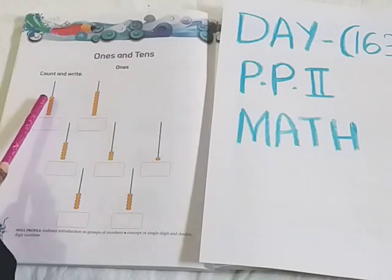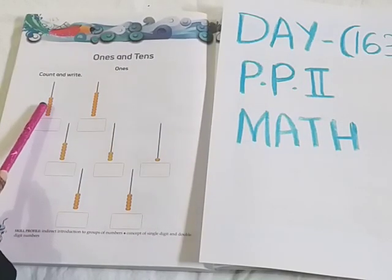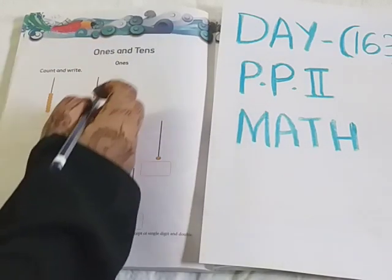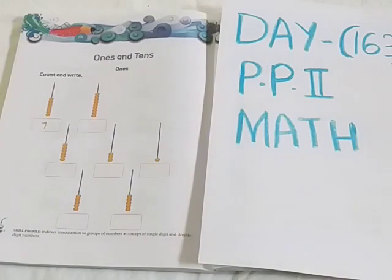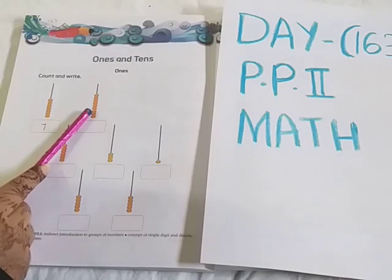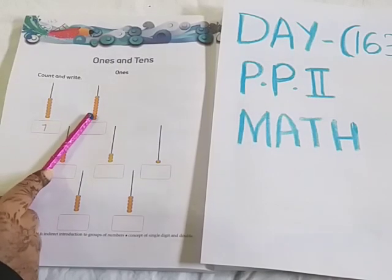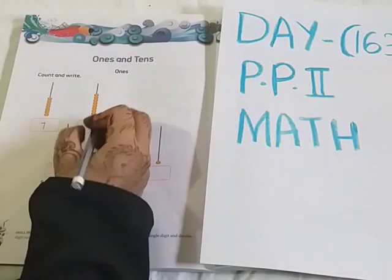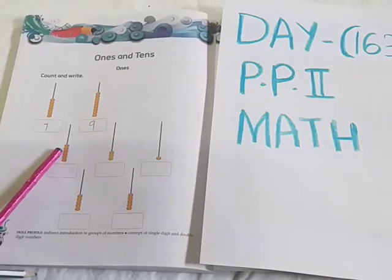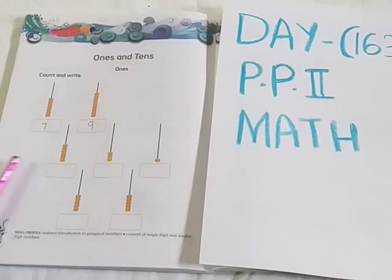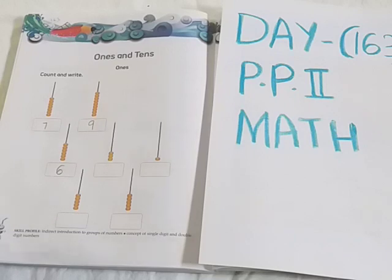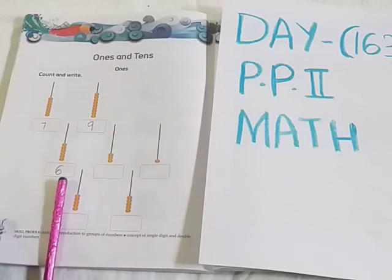Let us count children. There are 7 boxes, so we have to write number 7 here. See the next — there are 9 boxes, so you have to write number 9 here. See the next — there are 6 boxes, so write number 6 here. A single digit number will come under Ones, children.